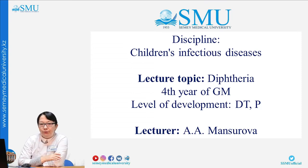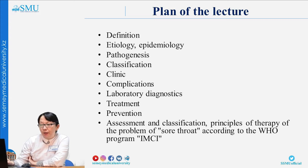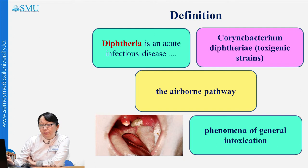Good day, dear students. Today's lecture topic is diphtheria in children. The plan of our lecture includes: definition, etiology, epidemiology, classification, clinical picture, complications, laboratory diagnosis, treatment, and prevention. Diphtheria is an acute infectious disease caused by toxigenic Corynebacterium diphtheriae, transmitted by airborne droplets, characterized by an inflammatory process with the formation of fibrous membranes and general intoxication.